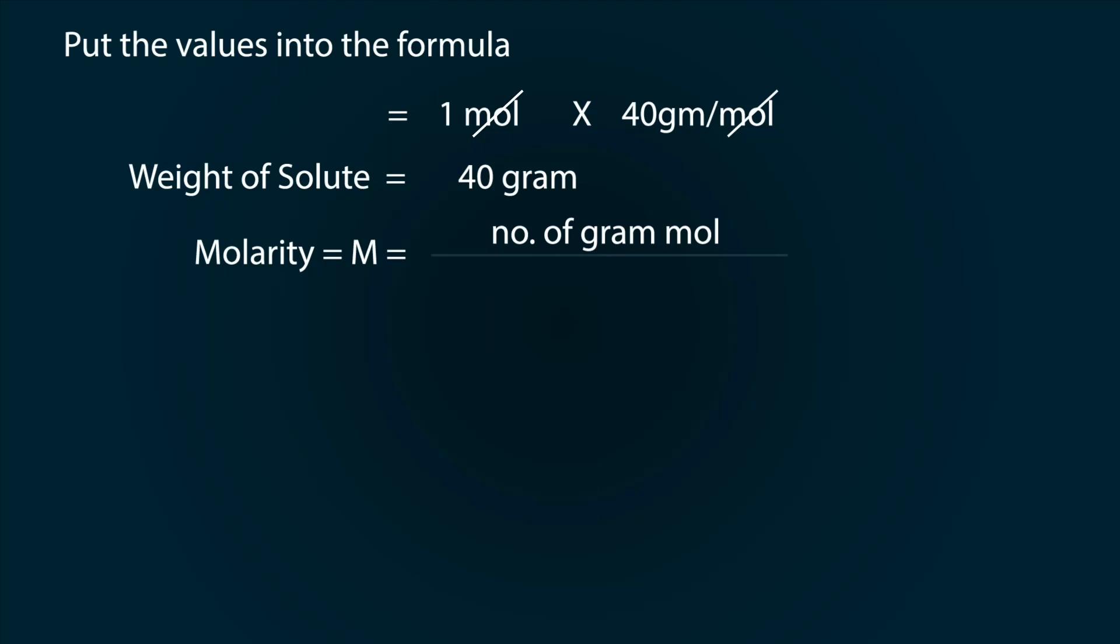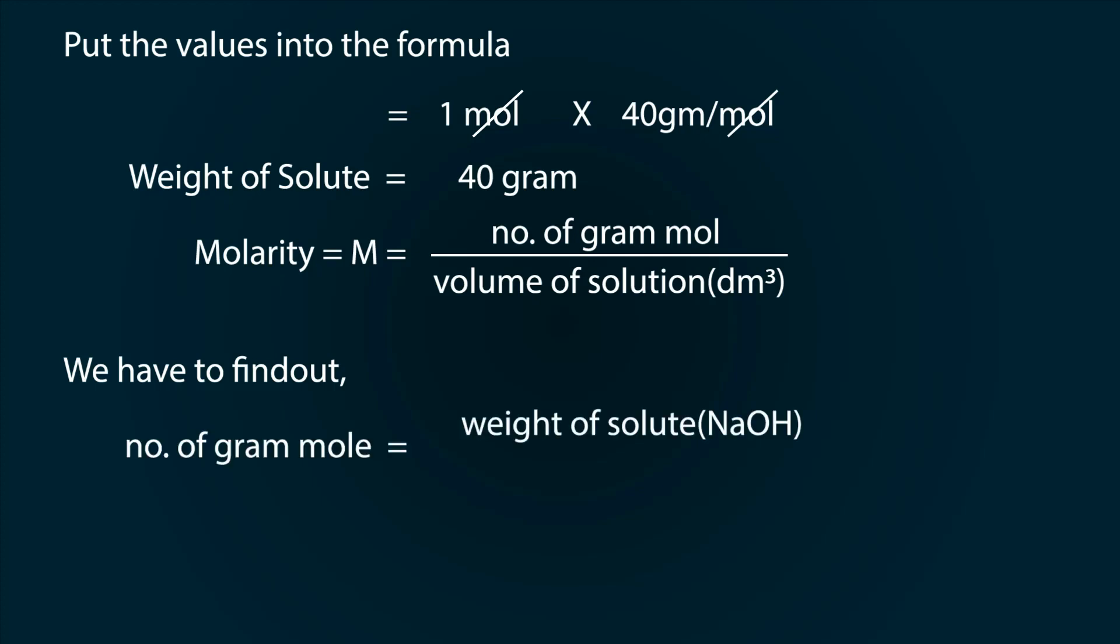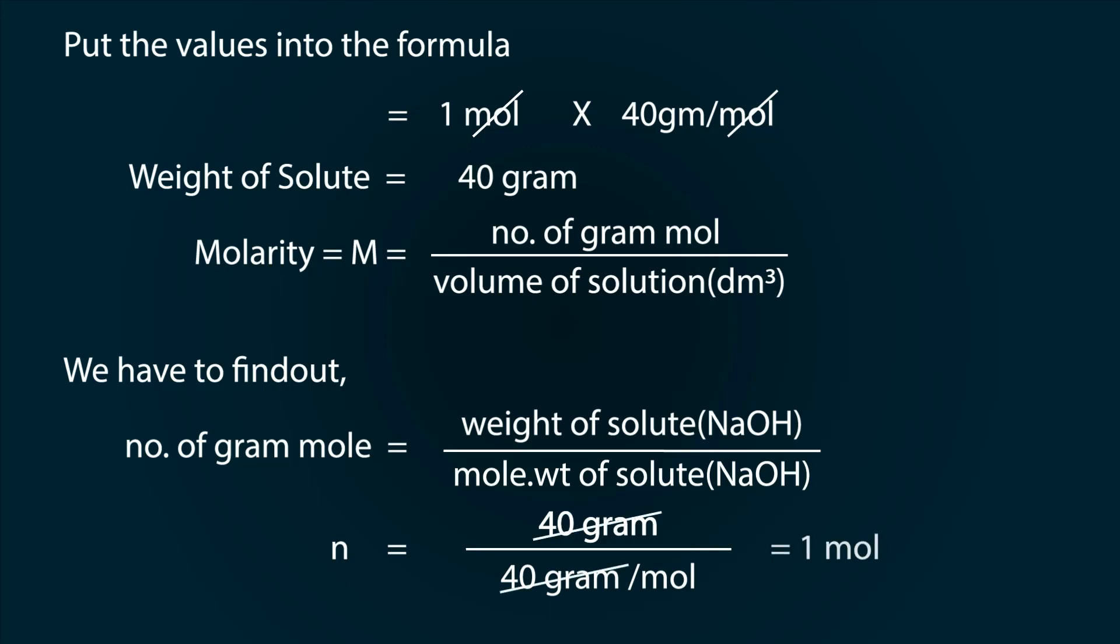Now, find out the molarity which is number of grams of mole divided by volume of solution in dm³. The number of grams of moles is equal to weight of solute divided by its molecular weight. So, 40 grams divided by 40 grams per mole, we get our number of grams of moles as 1.